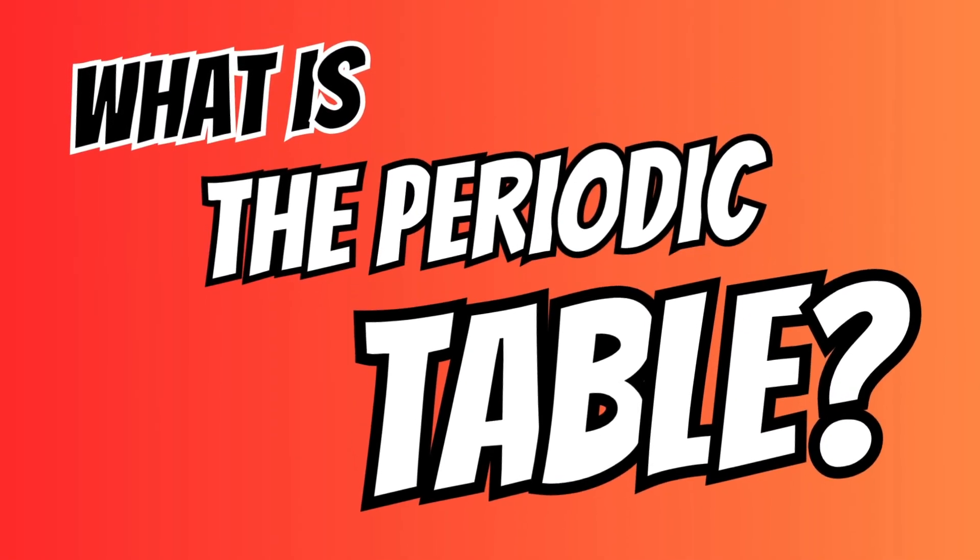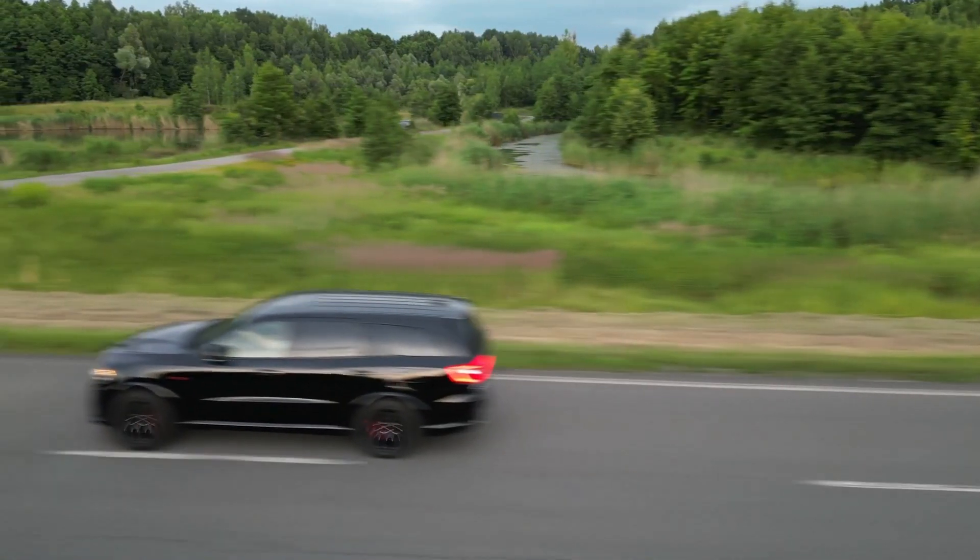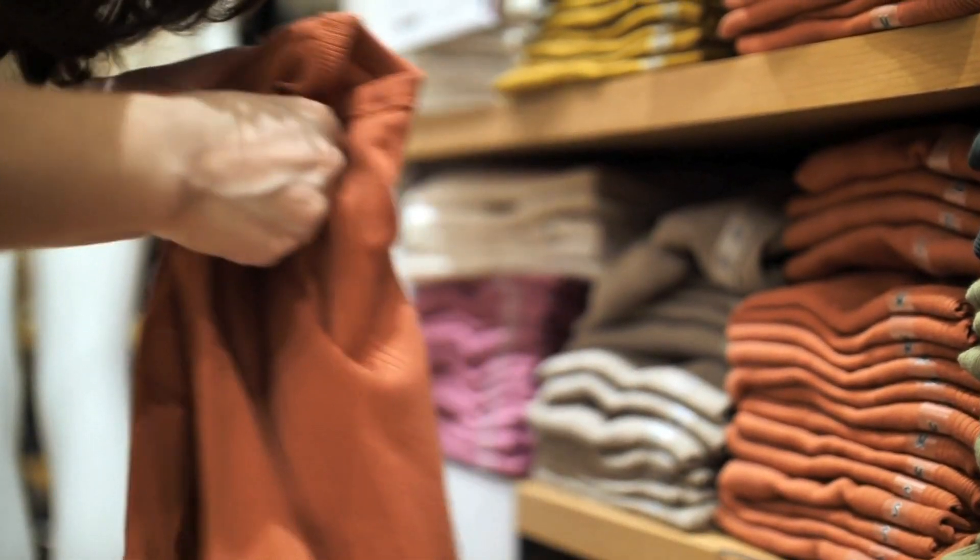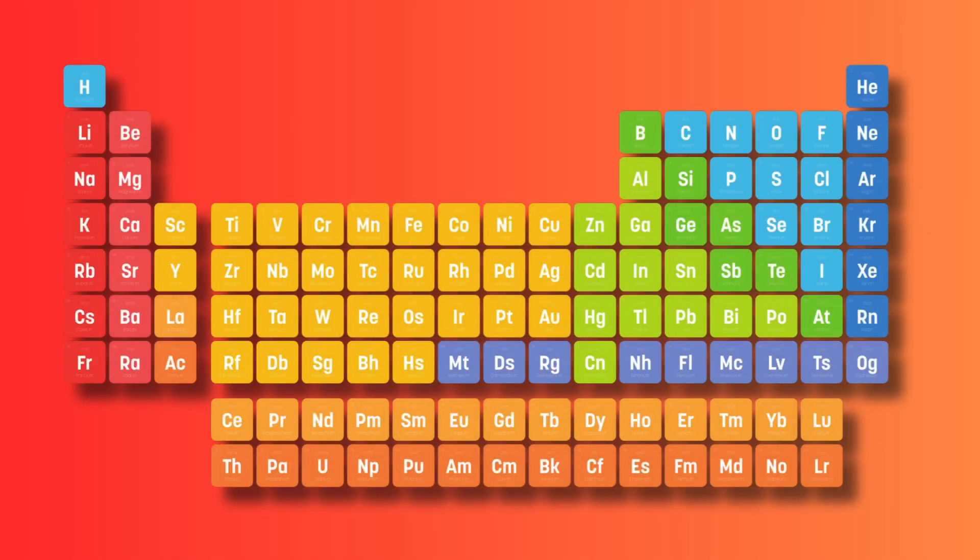What is the periodic table of elements? So, everything around us is made up of different elements. The periodic table is just a way of organizing those elements in a way that's easy for us to understand.